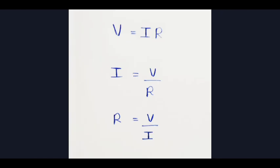Let's look at the equations. That's why we write the mathematical equations. V is equal to I into R. We can write this at constant temperature — the current is directly proportional. You can write the equation: V is equal to I into R.